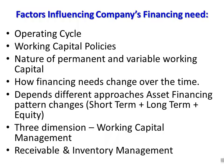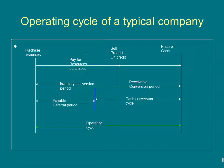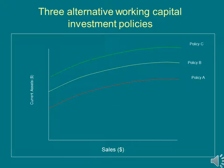Receivable and inventory management affect the operating cycle and working capital finance. The payment terms of suppliers, inventory conversion period, and receivable conversion period all influence working capital financing. Working capital policy also matters: Policy C (conservative) requires the highest working capital finance, Policy A (aggressive) requires the lowest, and Policy B (moderate) falls in the middle.